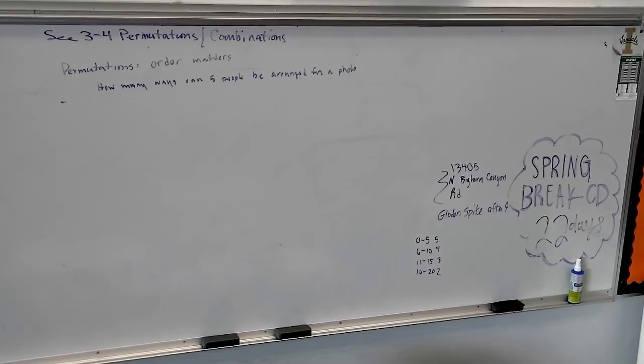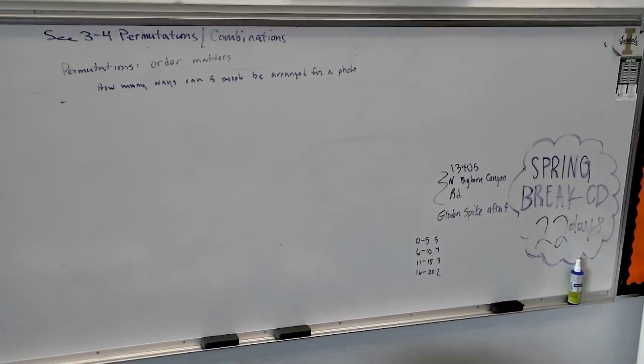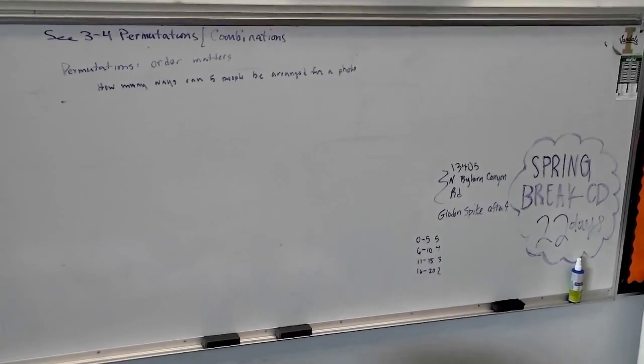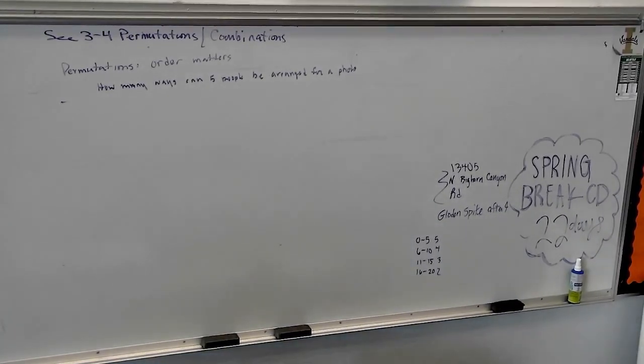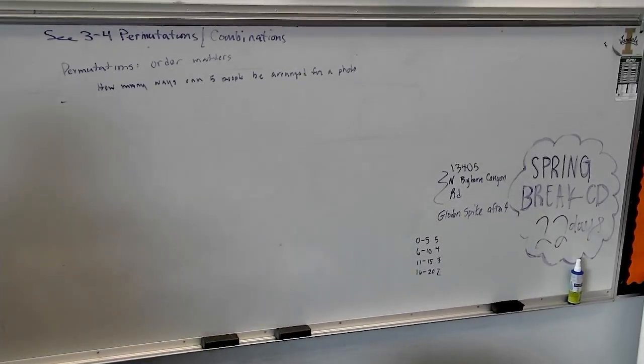Now, correction, four things: what a factorial button means, what a permutation is, what a combination is, and what is distinguishable events. So even though our book says there's only two things, there's actually four.